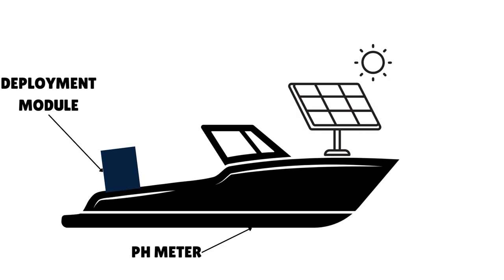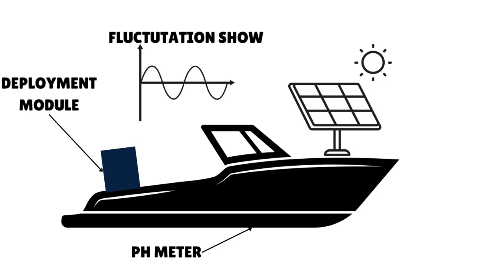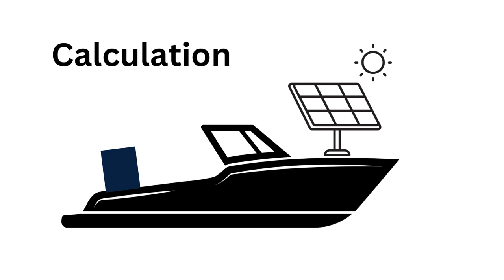There are two main interconnected modules in the boat: the pH meter and the deployment module. When a major fluctuation in the pH is detected by the meter, the deployment module is programmed to calculate the amount of buffer required, taking into account volume of the lake and pH detected, and deploy it evenly across the lake.